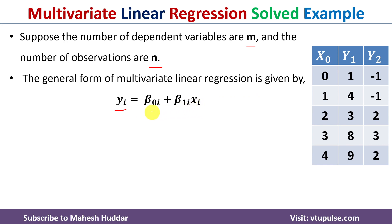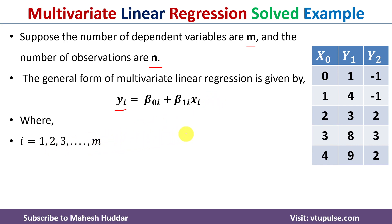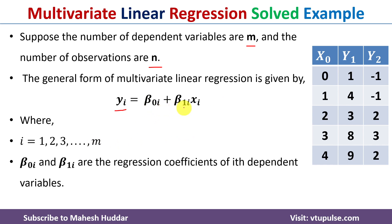Let's take an example with two response variables, y1 and y2, so i goes from 1 to 2. In general, i goes from 1 to m, where m is the number of response variables. Here, β₀ᵢ and β₁ᵢ are the regression coefficients of the i-th dependent or response variable.